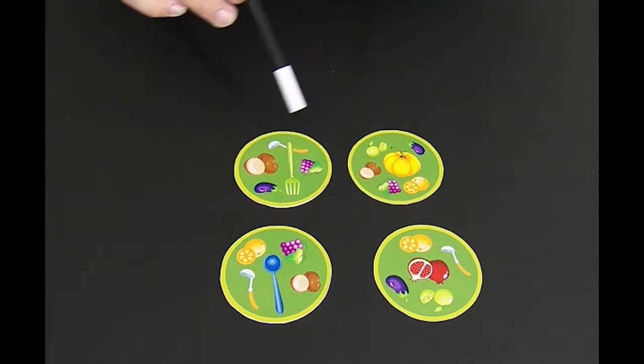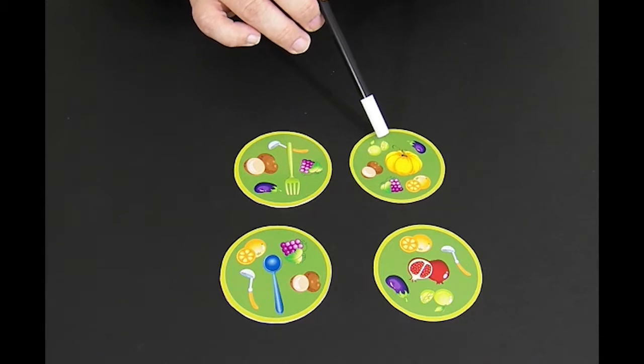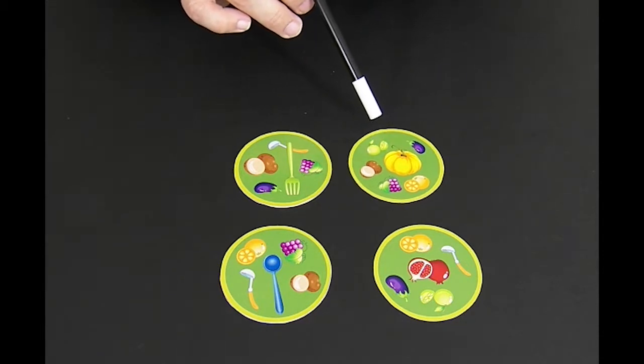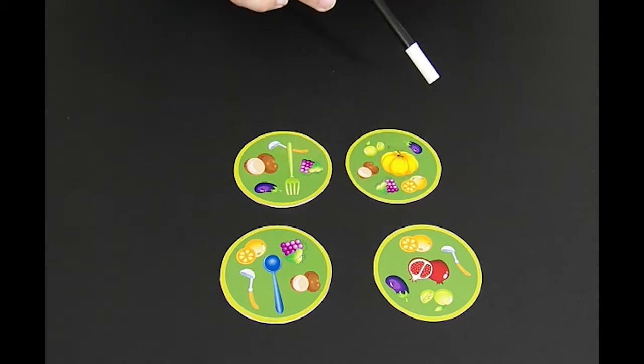Number five is the lime. If you look, there are five pieces of the lime. Number six is the orange, where there's one, two, three, four, five, six little segments.